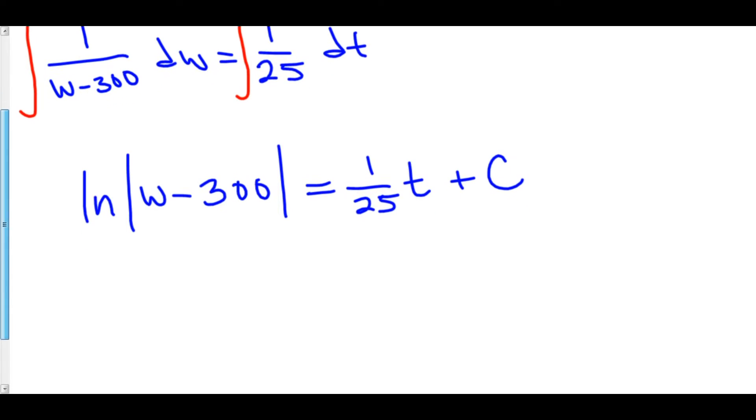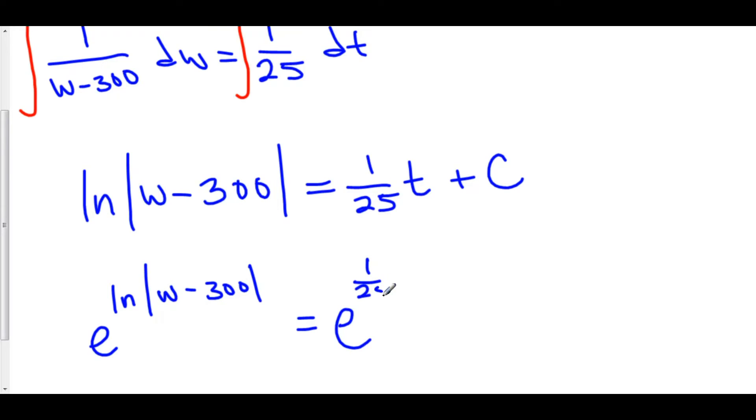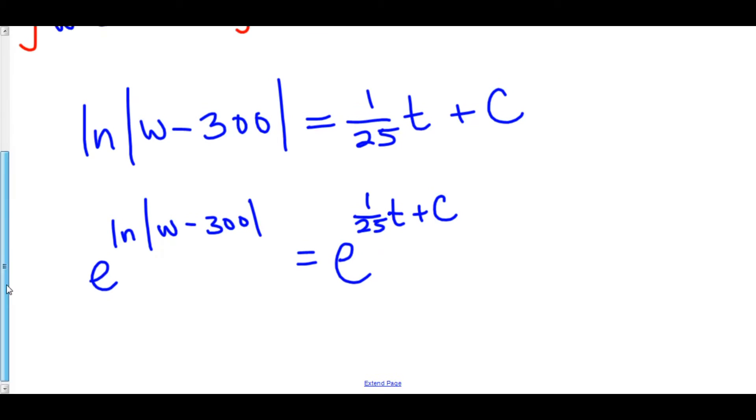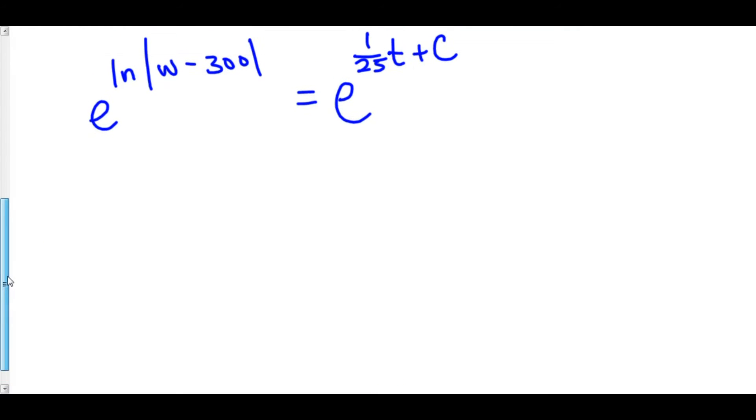Now our goal is to solve for w. To do this, we want to get rid of the natural log, which we can do by raising both sides to the power of e. So here we have e^(ln|w - 300|) equals e^(1/25t + c). The plus c is also in the exponent of e. On the left hand side, the e and the natural log cancel out and we're left with the absolute value of w minus 300.